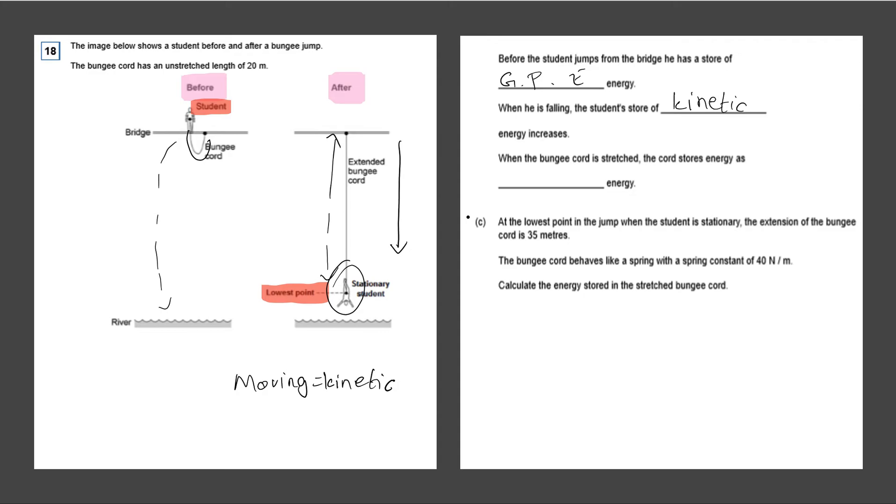When the bungee cord is stretched, the cord stores energy as—so remember, anything which stretches has elastic potential energy. And this is the energy stored from this bungee cord all the way when it lets go and it stretches all the way down. This stretch is the elastic potential energy. So we know that the answer to this is going to be elastic potential energy.